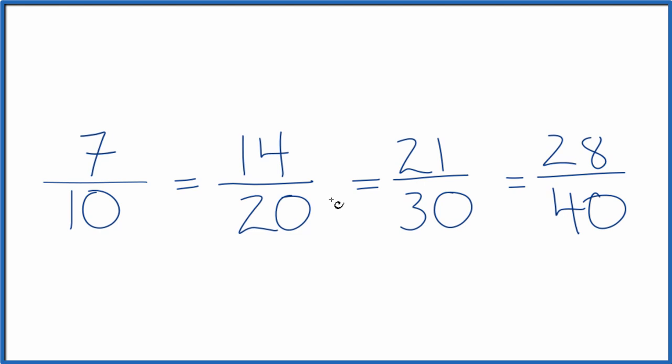So these are all equivalent fractions. If you divide 7 by 10, 14 by 20, 21 by 30, or 28 by 40, you get the same answer. These here, they're all equivalent fractions for 7 tenths.